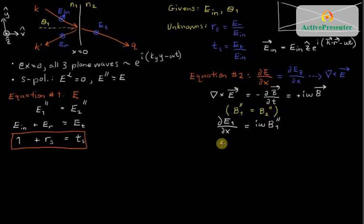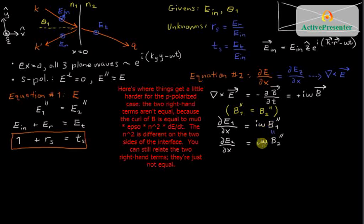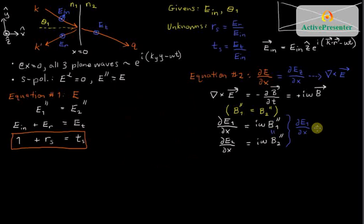Similarly, on the right-hand side of the interface, dE2/dx is equal to I omega B2 parallel. And then, I use this equation in yellow to notice that these two terms equal each other. So, these two terms are identical. And that means dE1/dx equals dE2/dx. So, dE1/dx equals dE2/dx.